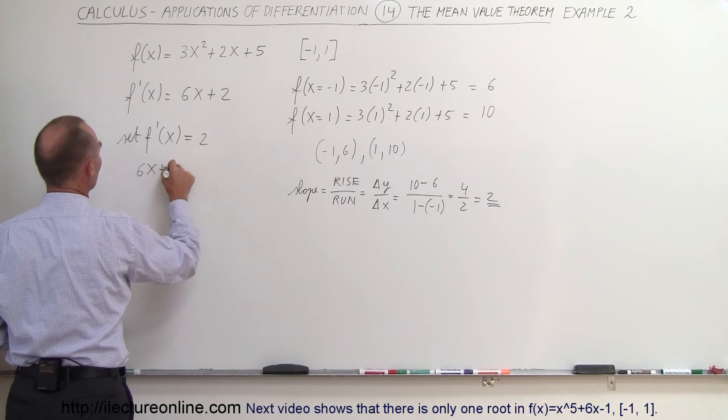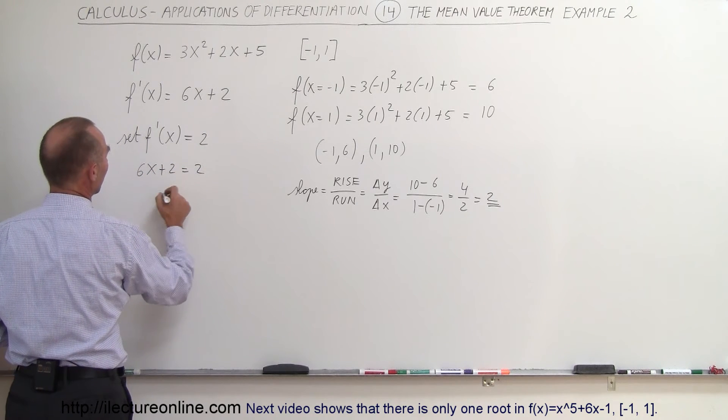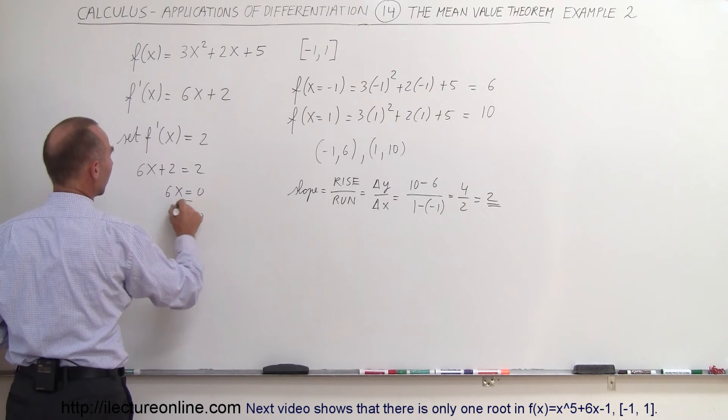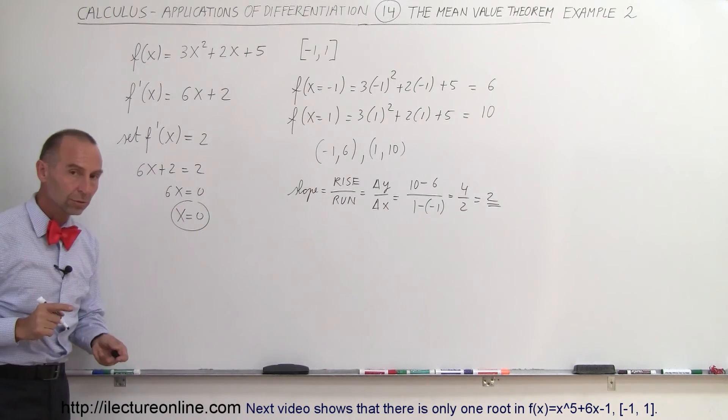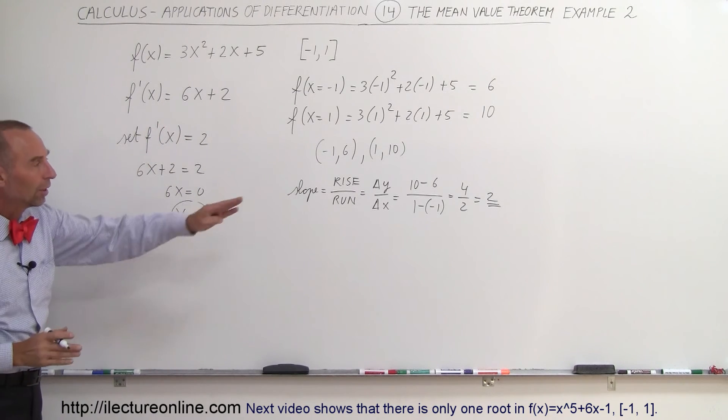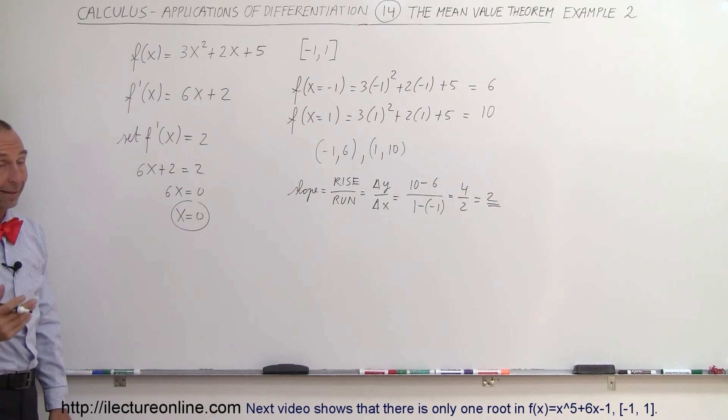So in other words, 6x plus 2 equals 2. That means 6x equals 0, which means x equals 0. So when x equals 0, if we plug that value into the derivative, we'll get the same slope that we got for the straight line. Let's try that.